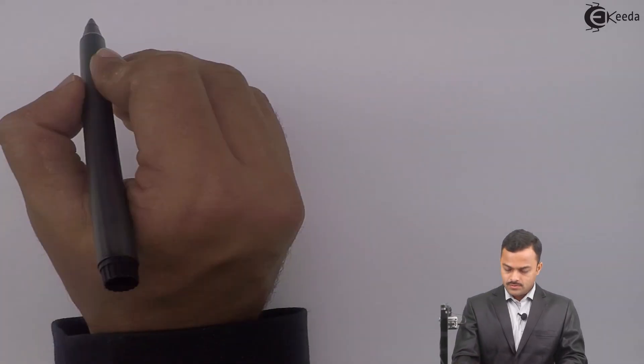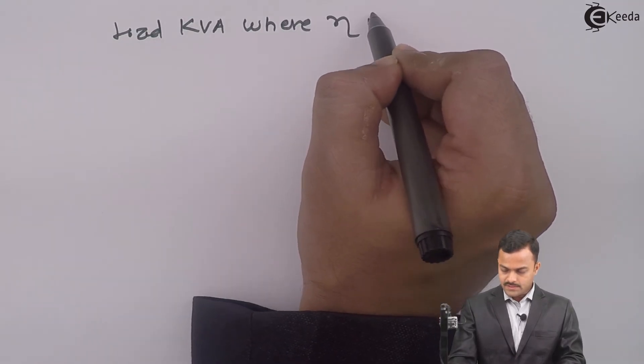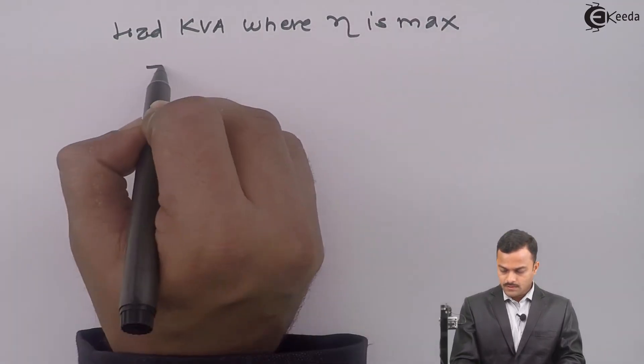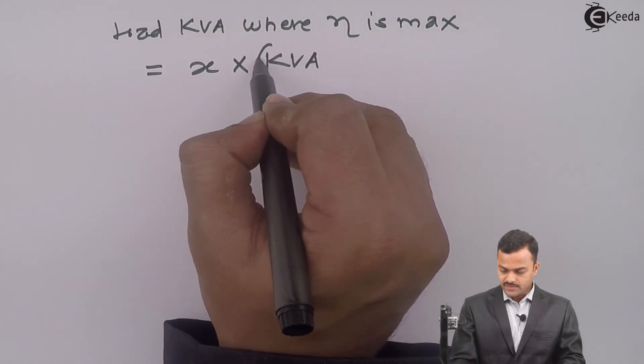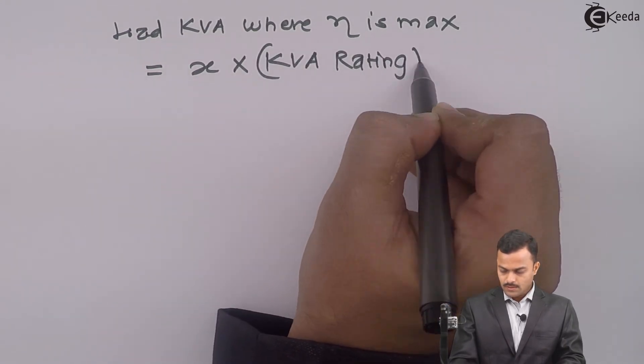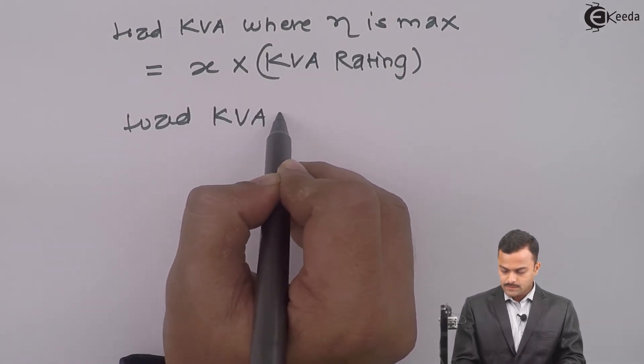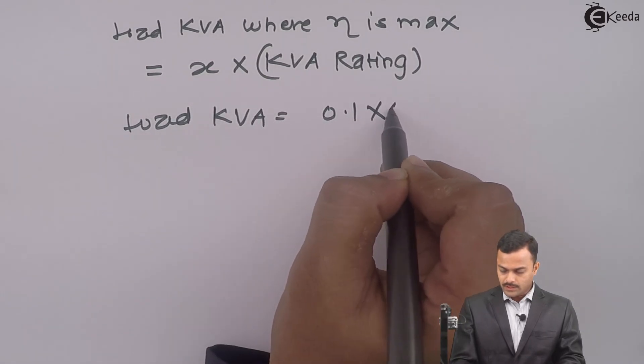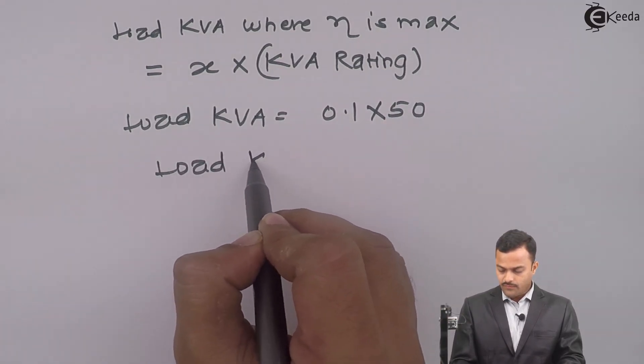First we will calculate load KVA. Load KVA where efficiency is maximum equals X multiplied by KVA rating. Load KVA for maximum efficiency is 0.1 multiplied by 50, which is 5 KVA.